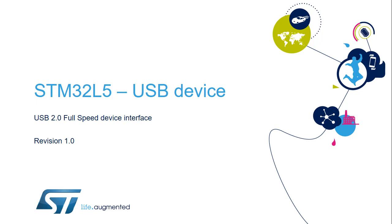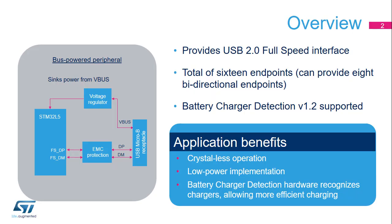Hello and welcome to this presentation of the STM32L5 USB 2.0 Full-Speed Interface. It covers the features of this interface, which is widely used to interface with a PC. This figure shows the connections between an STM32L5 microcontroller and a USB connector. The STM32L5 features a USB 2.0 Full-Speed communication interface, allowing the microcontroller to communicate typically with a PC.